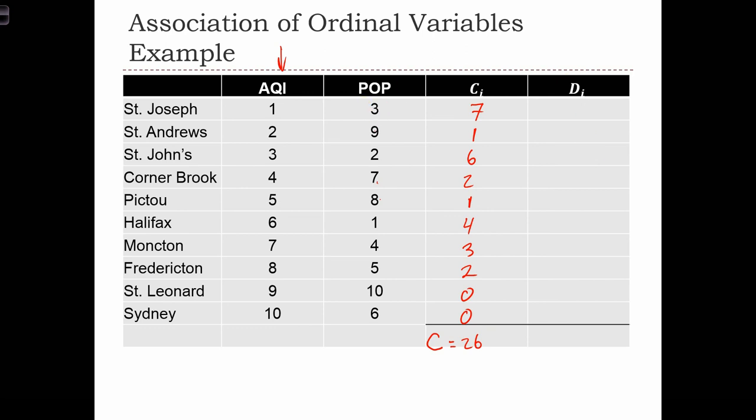Now let's do the discordant pairs. In this case, we're doing the same thing as before. We're just looking for observations below that ranking that are less than that ranking. So here the rank is 3, and we have 2 observations, 1, 2, that are below it. Here the rank is 9. We have 1, 2, 3, 4, 5, 6, 7 below that. Here the rank is 2, and we only have one rank below it in the table.